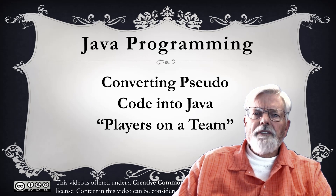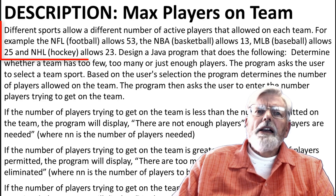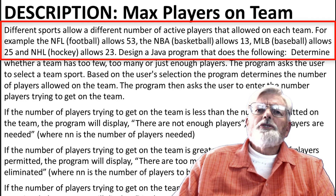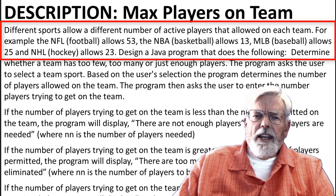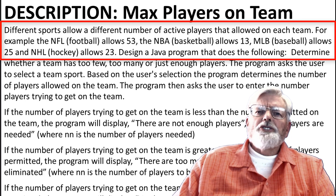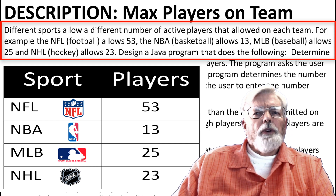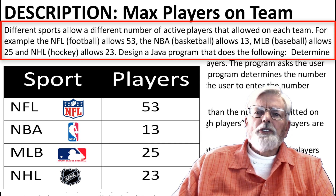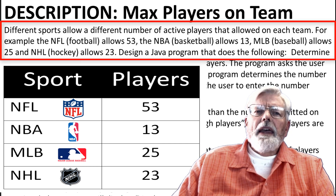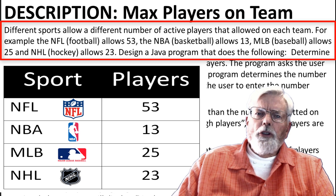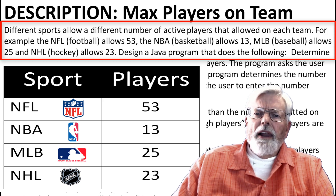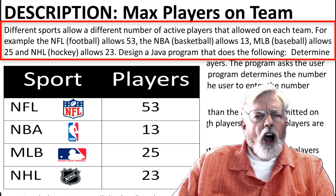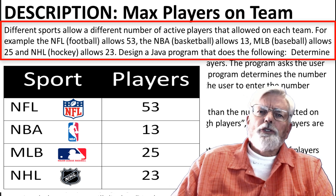Here is the definition of the project. Different sports allow a different number of active players on each team. For example, the NFL (football) allows 53. The NBA (basketball) allows 13. MLB (baseball) allows 25. And NHL (hockey) allows 23.